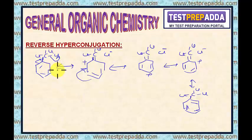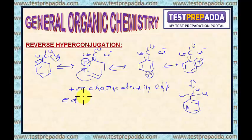So, the conclusion is what? Here you can see positive charge, positive charge, and positive charge. So, a positive charge density at ortho and para positions. Basically we say electron density decreases at ortho and para positions.